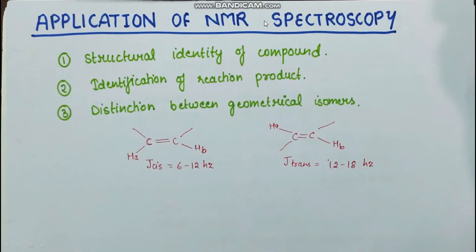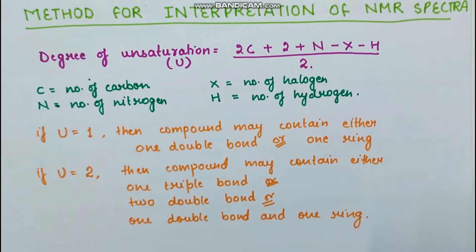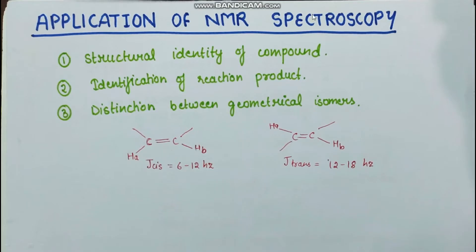Applications of NMR spectroscopy: First, it helps in determining structural identity — if two compounds give the same NMR spectra, they should be identical. Second, identification of reaction products — if you are getting two different sets of peaks, the reaction is forming two different products. Third, distinction between geometrical isomers — for cis isomers the coupling constant J is 6–12 Hz, and for trans isomers it is 12–18 Hz, allowing differentiation between cis and trans.